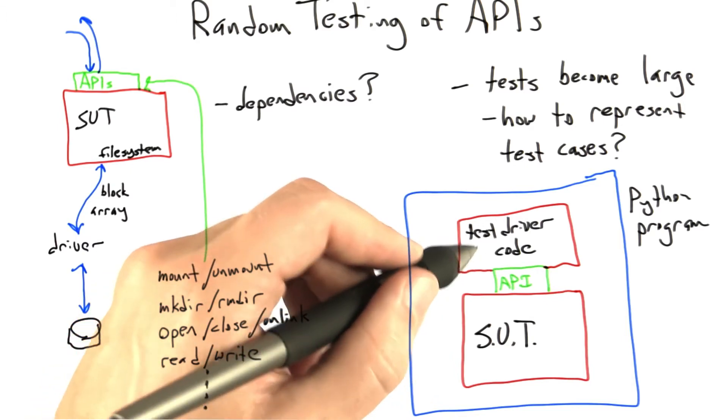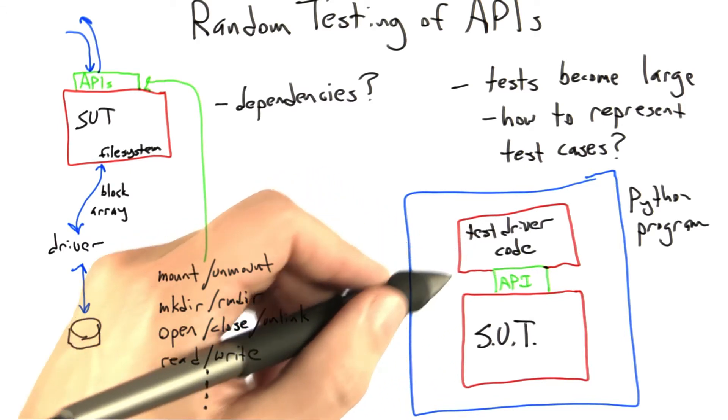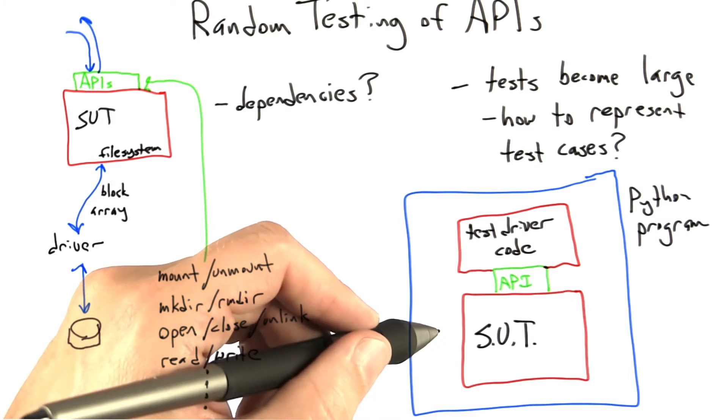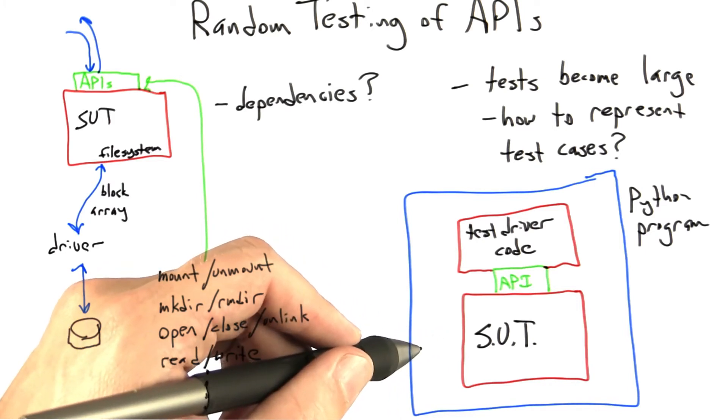Now there are a couple of cases in which that's not so good. One of them is where we find a particular test case that makes our system fail, and we'd like to save off that test case for later use in regression testing.